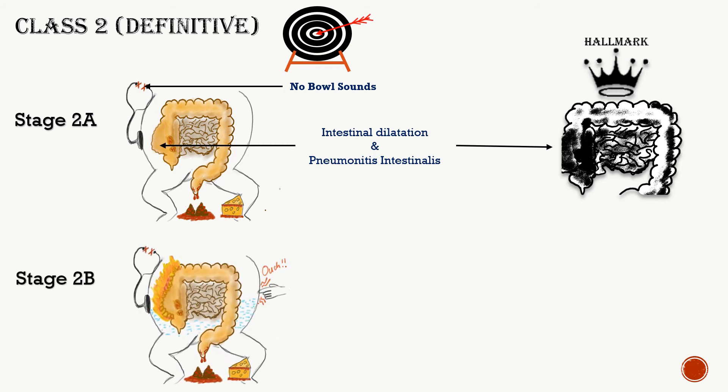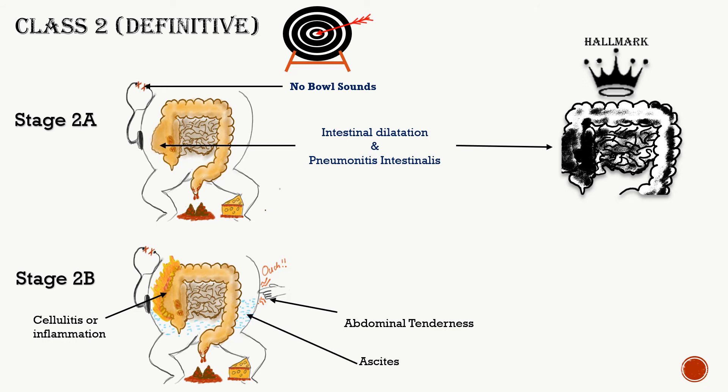Stage 2b contains all the features of stage 2a along with cellulitis or bowel wall inflammation, abdominal tenderness, and accumulation of fluid in the peritoneum — that is, ascites. All these signs indicate inflammation, showing the disease started in the lumen but has now progressed to involve the gut mucosa, causing abdominal tenderness, ascites, and cellulitis.